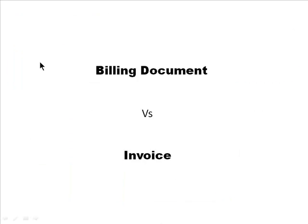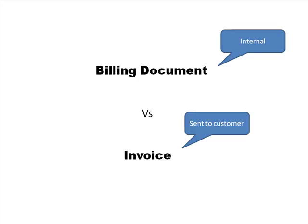A billing document and an invoice are terms used interchangeably, but there is a distinction. A billing document is an internal document that is evidence of the fact that a customer has been billed. An invoice is the document you actually send to the customer. They probably contain identical information.